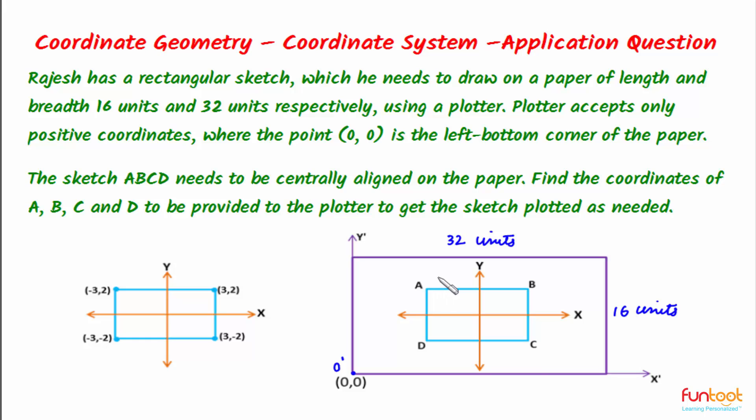But before solving this question, we should know what is a plotter. A plotter is a device which is attached to the computer like a printer and it is used for drawing complicated sketches. The plotter will not take negative coordinates, so we will have to find new coordinates for ABCD so that the sketch can be drawn.